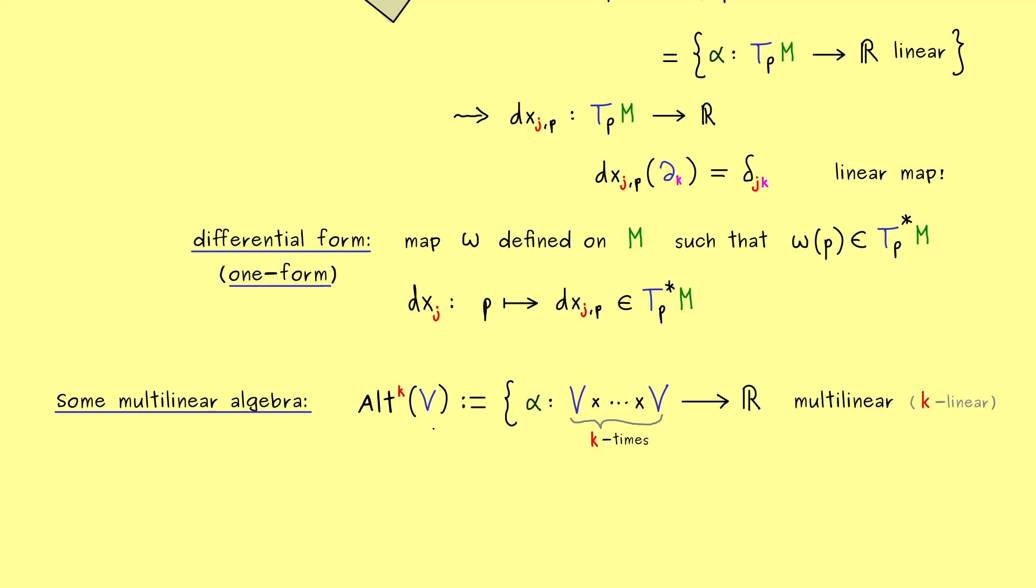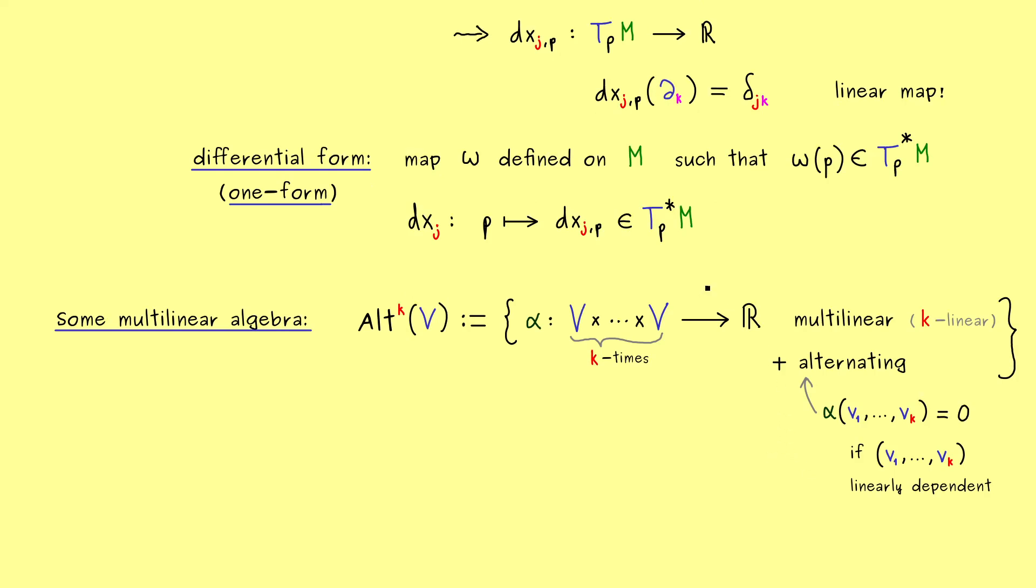We also have the alternating part here. Alternating is a property you might have seen from the determinant in linear algebra. In short, if the input is linearly dependent, then the output is zero. More precisely, if you have k vectors from the vector space and put them into our map alpha, this is zero if the k vectors form a linearly dependent set. This is exactly what we need for differential forms.